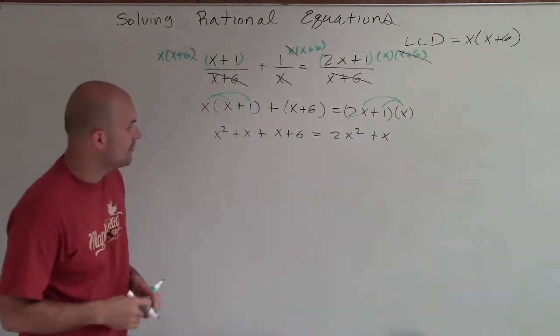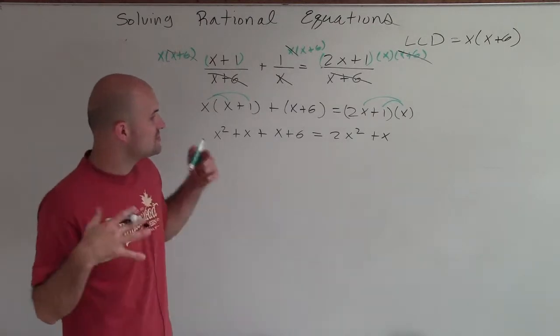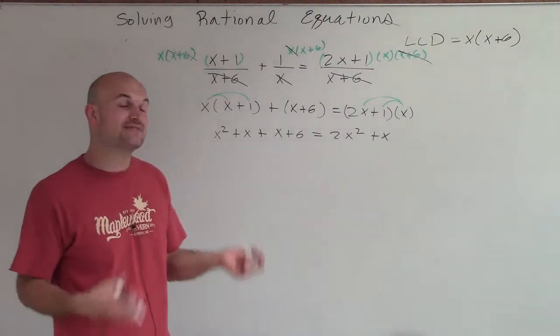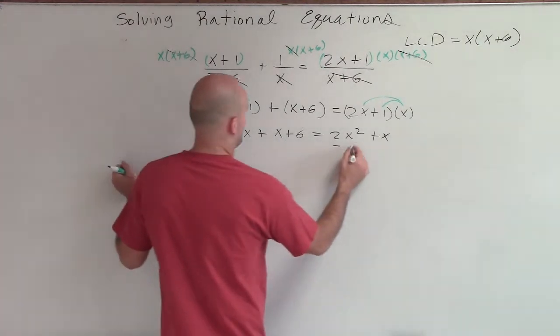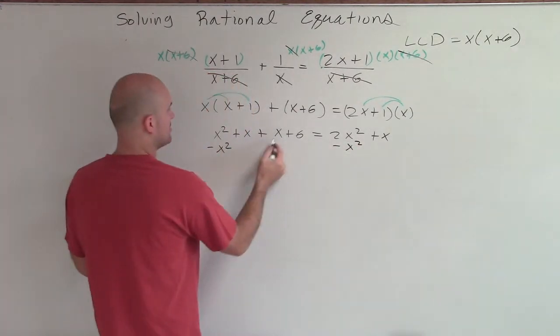So now what I need to do is I need to solve my quadratic. So that means I need to get everything over to the same side and set it equal to 0. So what I'll do is I'll subtract an x squared. This becomes 2x.